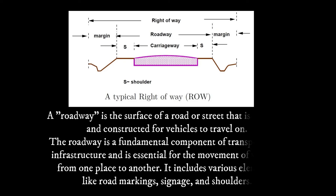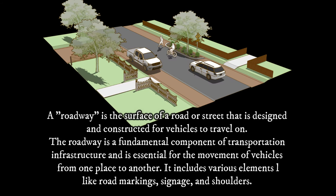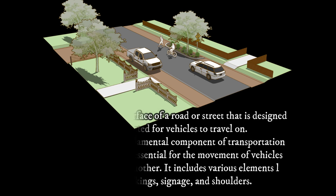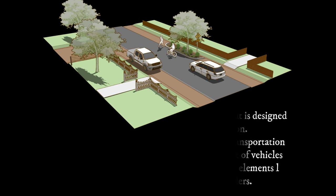The roadway is the surface of a road or street that is designed and constructed for vehicles to travel on. The roadway is a fundamental component of transportation infrastructure and it is essential for the movement of vehicles from one place to another. It includes various elements like road markings, signages, and shoulders.